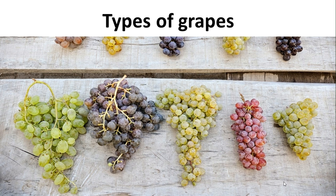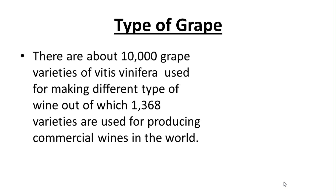These grapes are grown exclusively for winemaking. Now, there are around 60 to 80 species of grape variety, and we will be concentrating on only one species called Vitis vinifera — a very important name to remember. There are about 10,000 grape varieties of Vitis vinifera. Out of these 10,000, around 1,368 varieties are well-known and commercially used for wine production around the world.